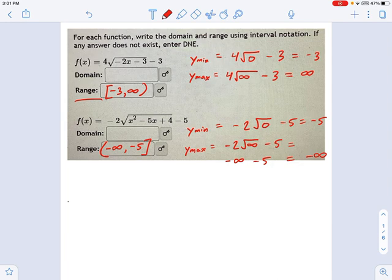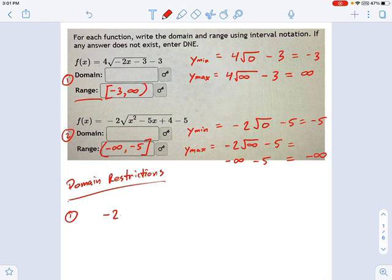The domain is a little bit different method. For the domain, you really must talk about domain restrictions. And we'll talk about that first one first, number 1. So with number 1, the domain restriction is that negative 2x minus 3 must be greater than or equal to 0. Think about why that is. Maybe pause the video, convince yourself this is true. The reason is, you can't have this less than 0, or you're going to be square rooting a negative. That means you get imaginary numbers. And we're trying to avoid imaginaries. We're only looking for real numbers.